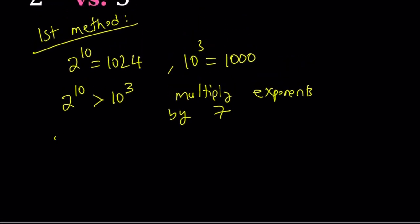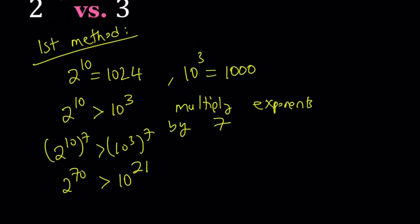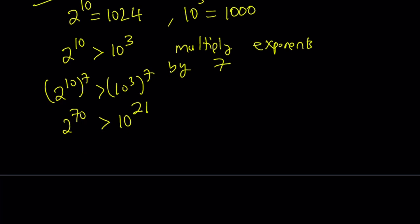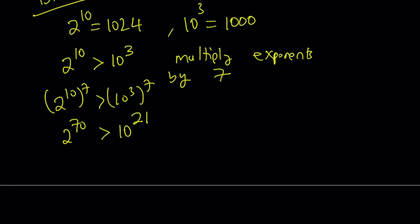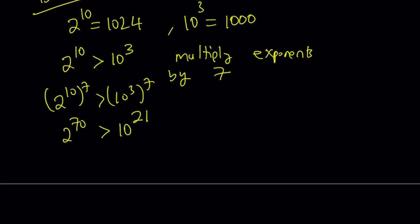So let's go ahead and do that — multiply exponents by 7, in other words, we're raising both sides to the 7th power. This gives us 2 to the power 70 is greater than 10 to the power 21. And notice that I'm supposed to compare the number on the left-hand side to 3 to the power 41, so I need to be able to get to 3 to the power 41 from here.